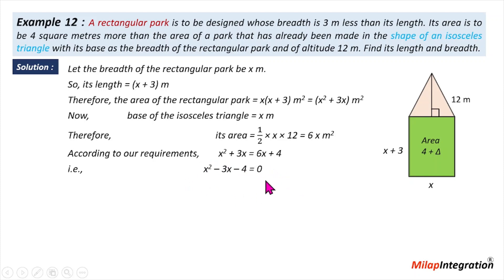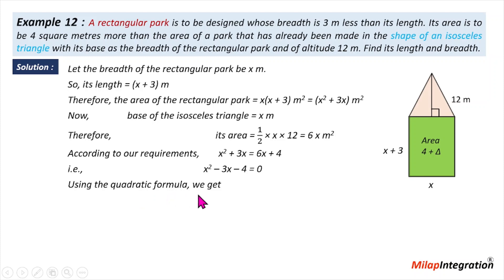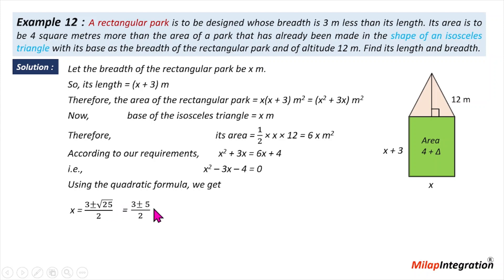We can solve this quadratic equation using the quadratic formula: x equals minus b plus or minus the square root of b² minus 4ac, all divided by 2a. Here a is 1. Solving gives us x equals 4 and x equals minus 1.